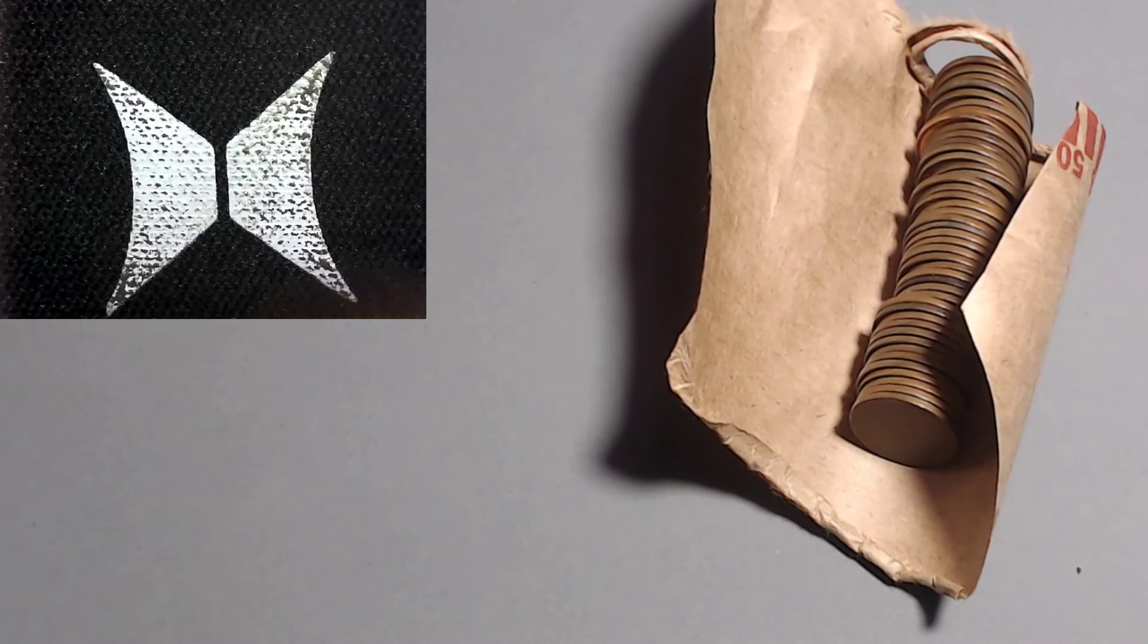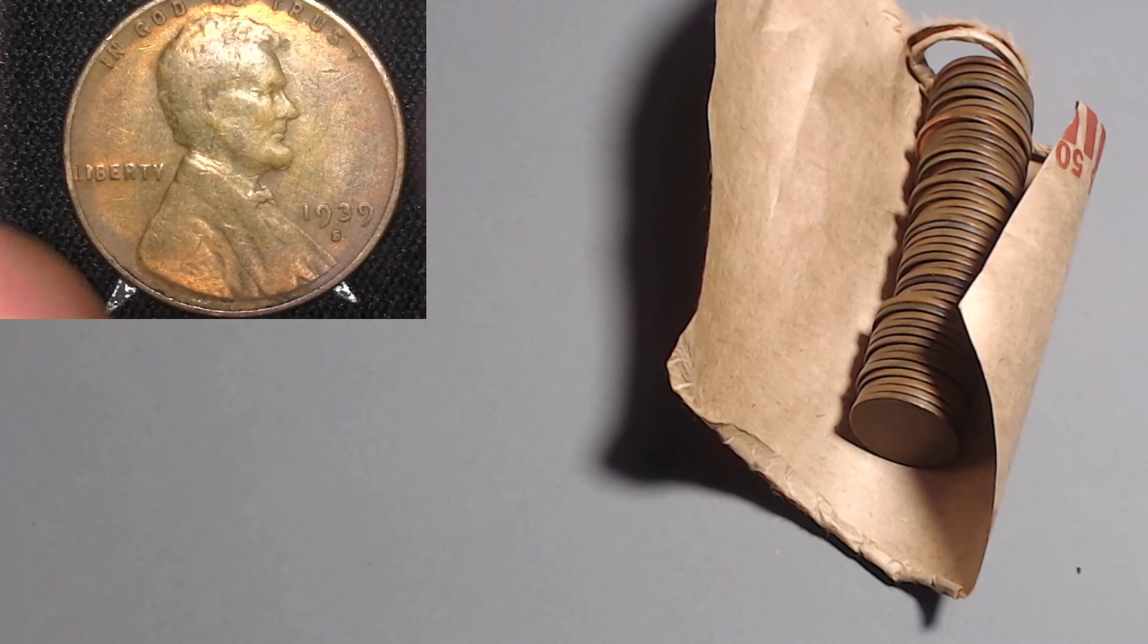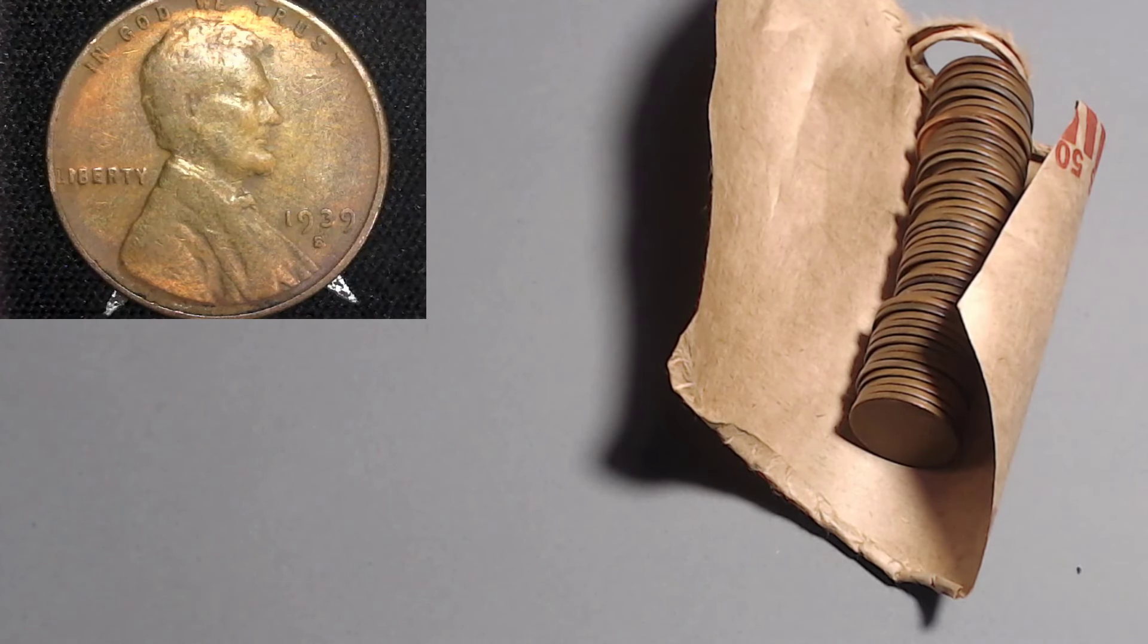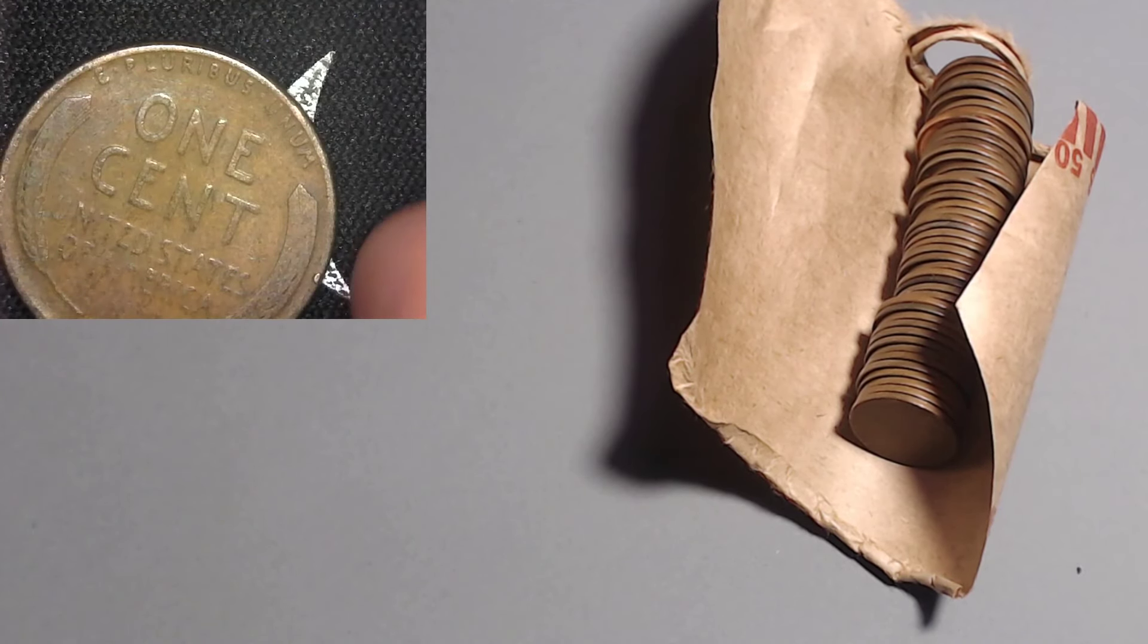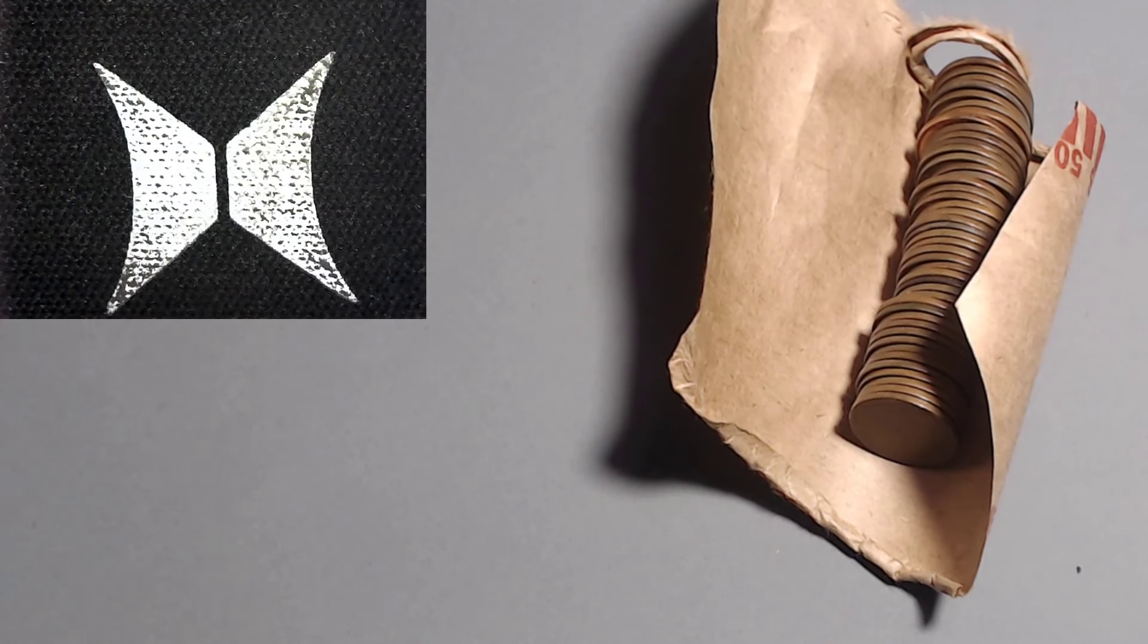And the next one out of our roll is a 1939 San Francisco. 39S with 52 million. I really wish that was a Denver, but it's not. Sad day. Still only 52 million, though. I guess I cannot complain.